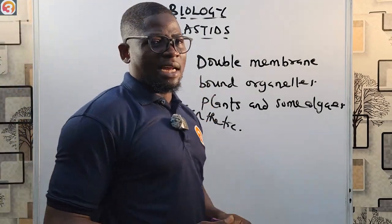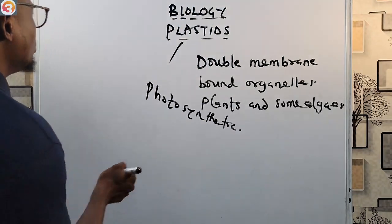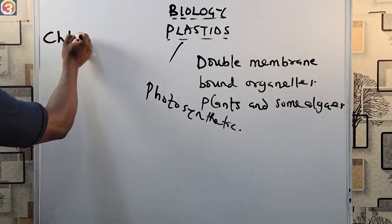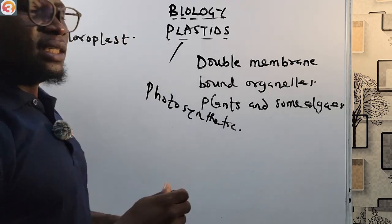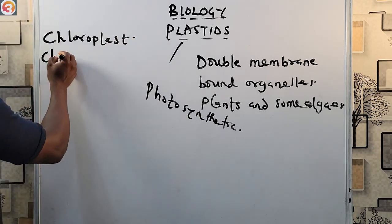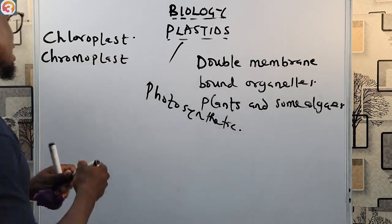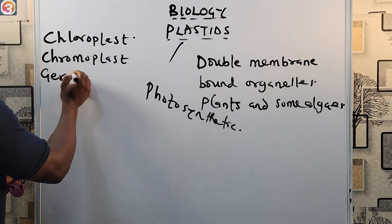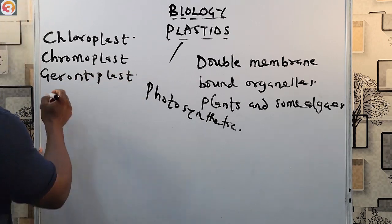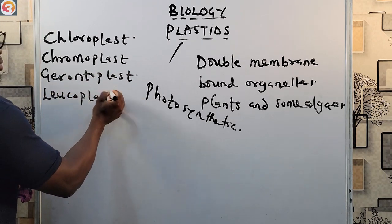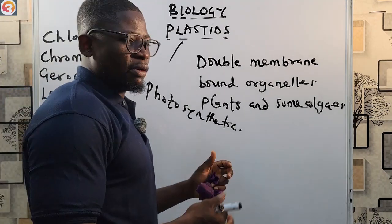Now let's look at some common plastids. We have: chloroplasts, chromoplasts, gerontoplasts, and leucoplasts. These are some of the common plastids that we have, and I'll look at them one after the other.